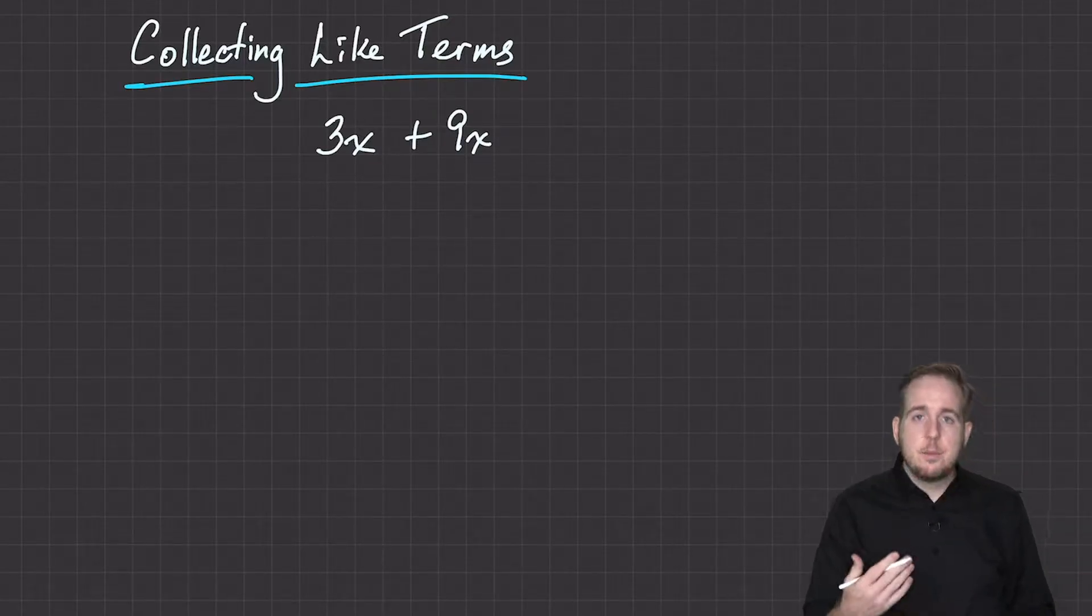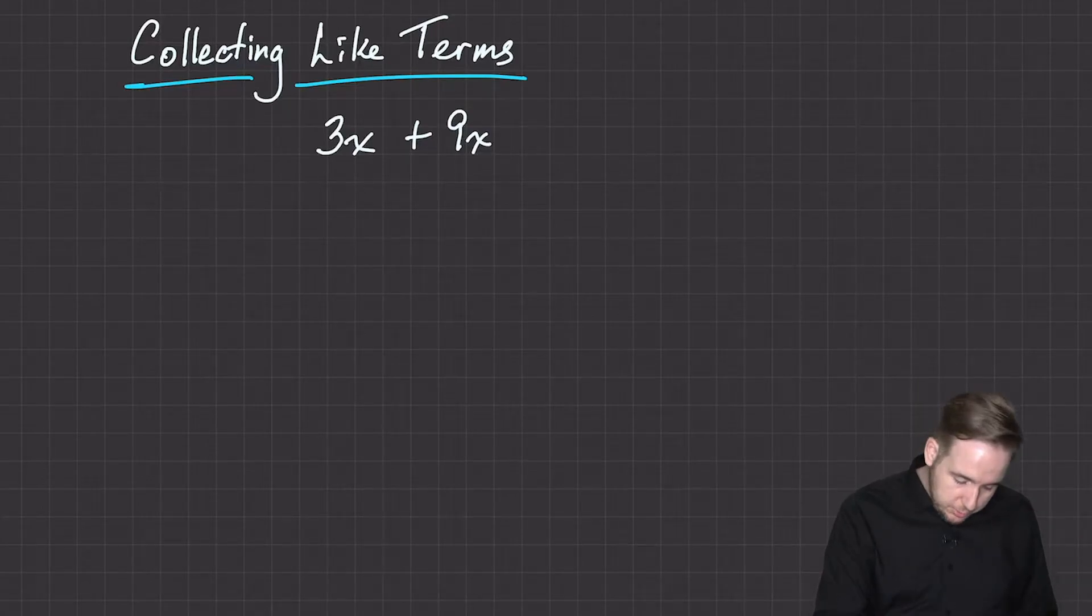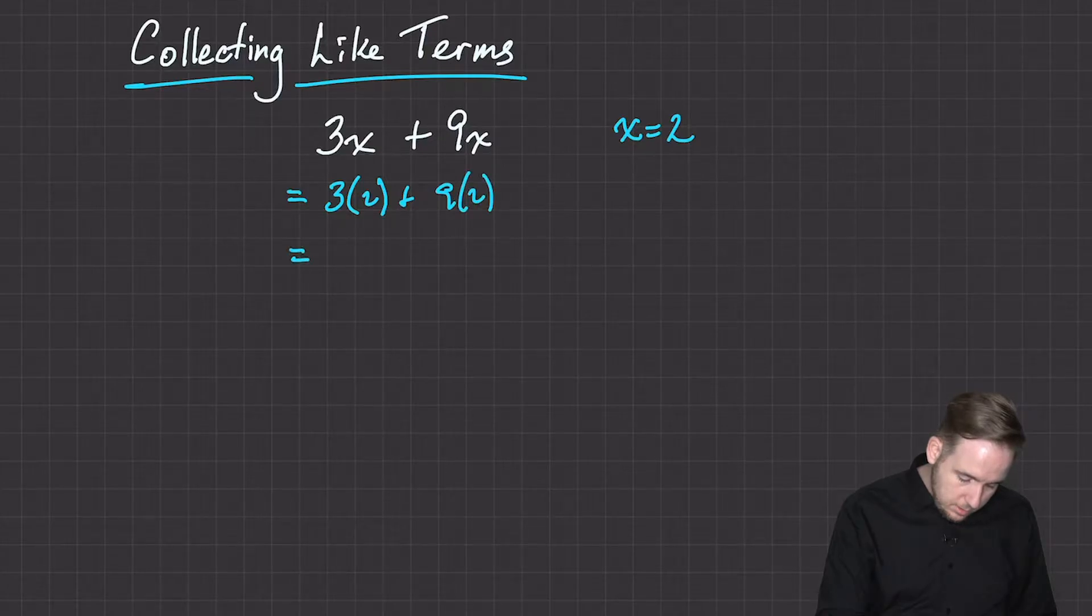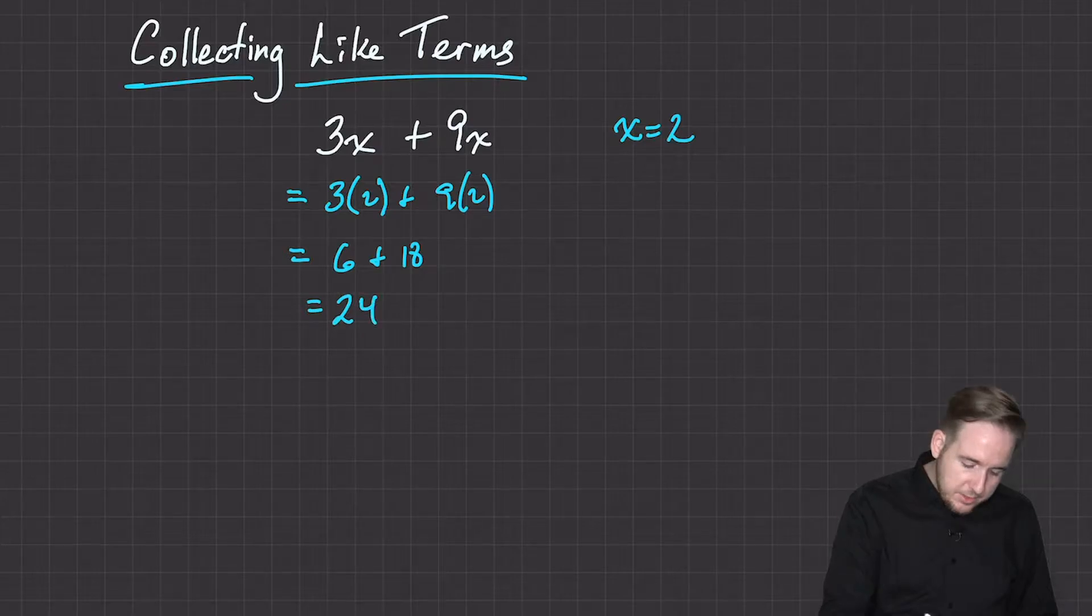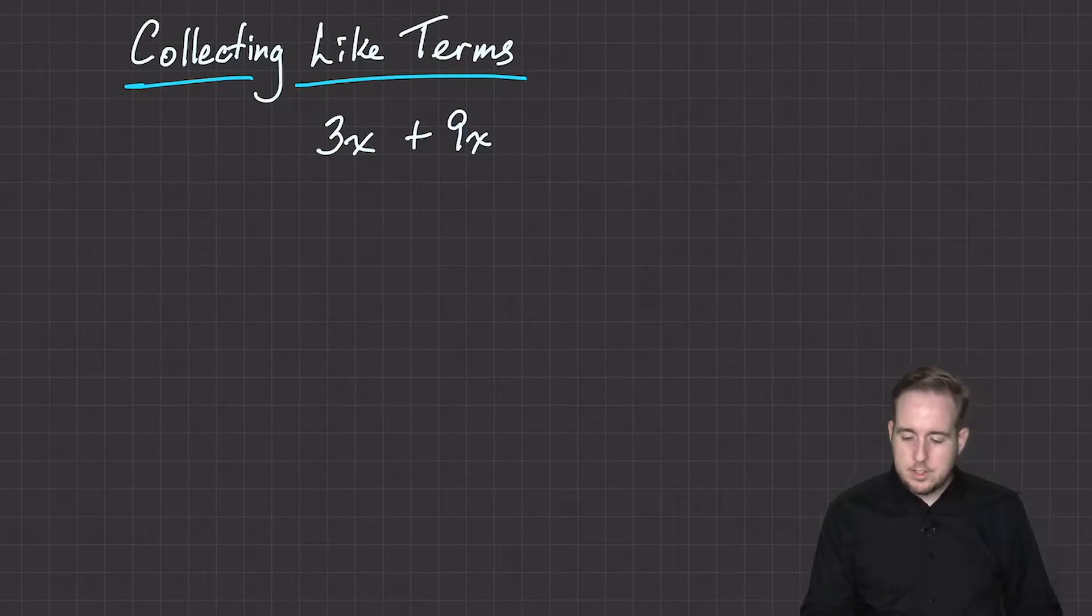And remember, an expression is some collection of mathematical operations that probably includes variables and instructions for what to do. So something like 3x plus 9x. I know that's the one I want to use first. And we don't know what this is right now. But if someone were to tell us what value they wanted to use for x, like say they told us that x was going to be equal to 2, then we could start to work.